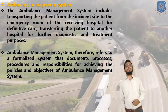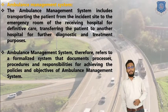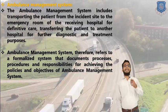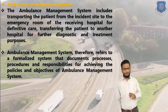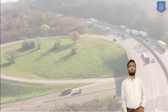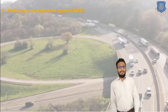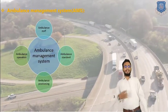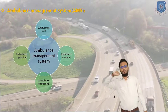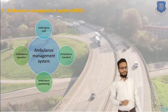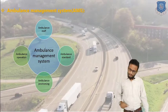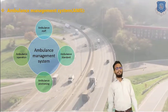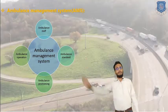We openly use 108 organizational activities all over India, and these are very helpful in our domestic life. Now, in ambulance management system, there are mainly four pillars: first is the ambulance staff, second is the ambulance standard, third is ambulance positioning, and fourth is ambulance operation. These are the basic four pillars of the ambulance management system.